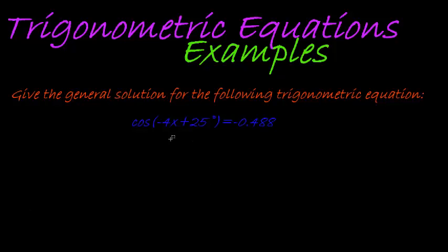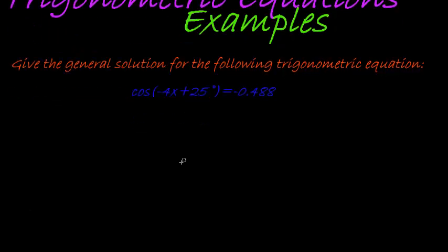You'll notice how this example differs from previous examples is that the interior of our ratio, the cos, doesn't just have a single variable as an input. It actually has an expression as an input, and the only difference where that comes in is in our general solution.